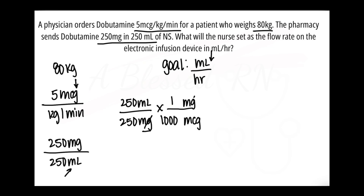Next, we put in our prescription: 5 micrograms per kilogram per minute, so we can cancel out the micrograms. They are not part of the goal, so they must be canceled out. So 5 micrograms goes on top, with kilograms and minutes on the bottom, and we cancel out those micrograms.